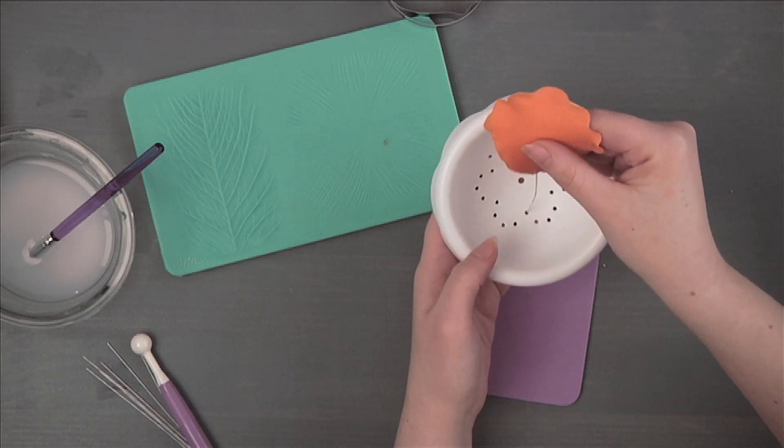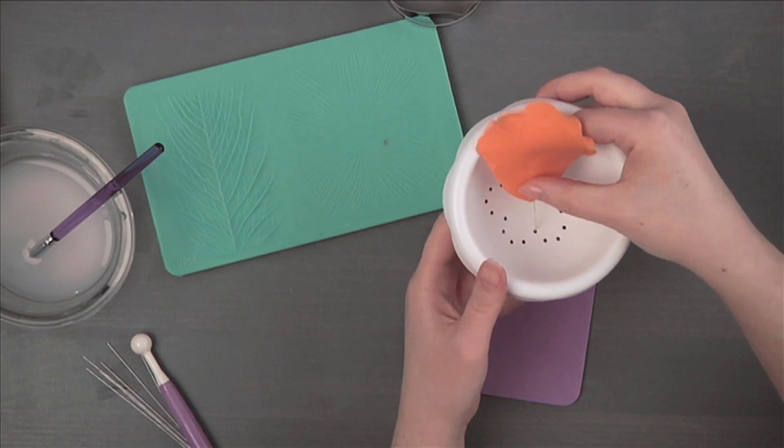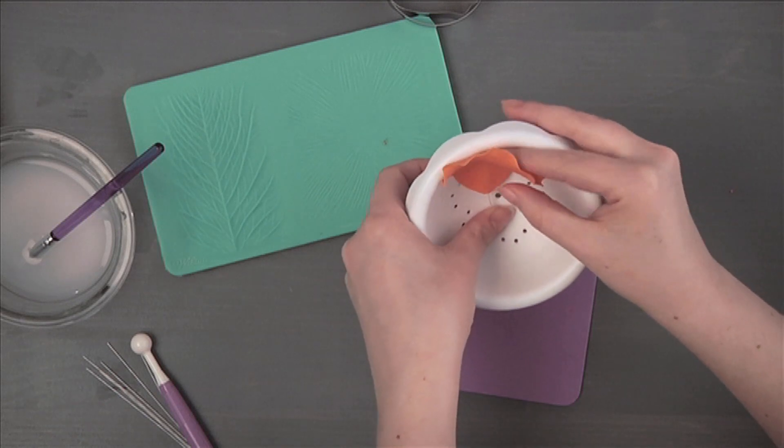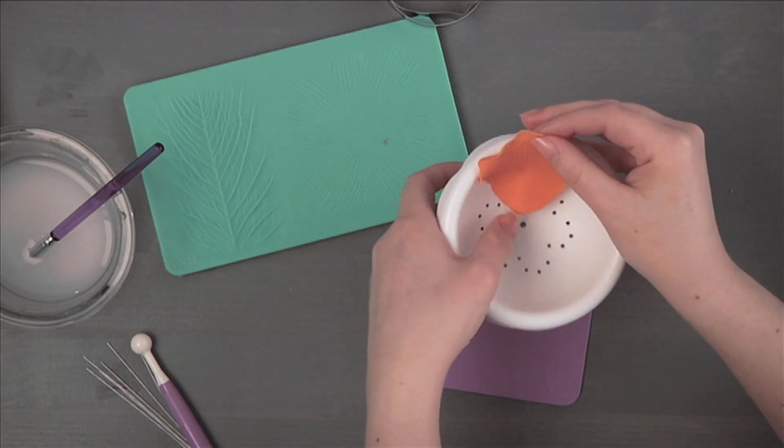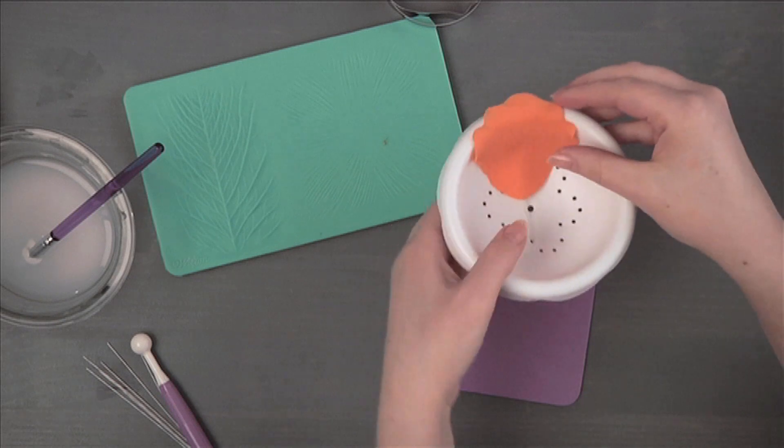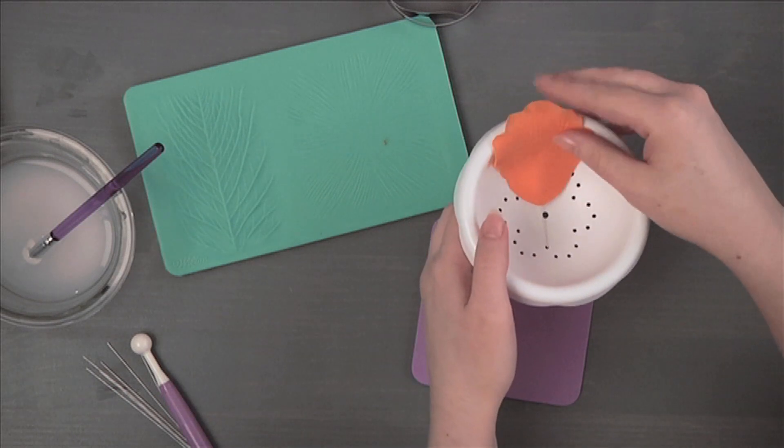Dust the flower forming bowl with cornstarch and position the petal with the top edge overlapping the edge of the cup. Two petals will fit in each cup. Repeat this process to make three additional outer petals.